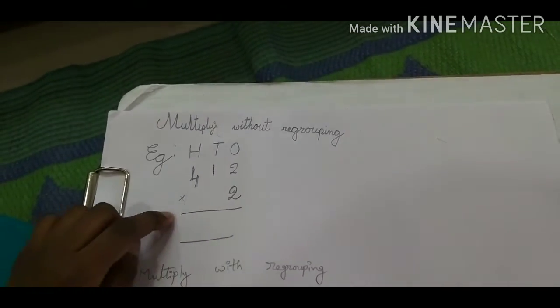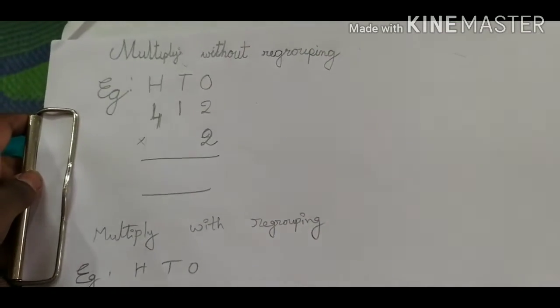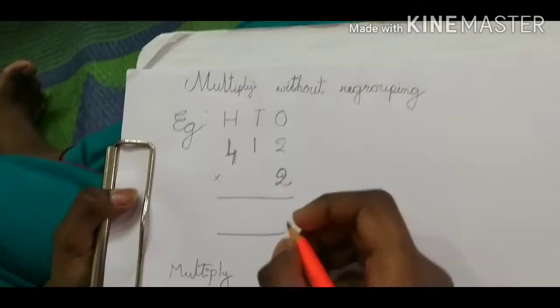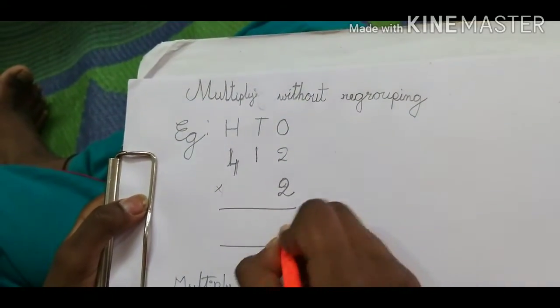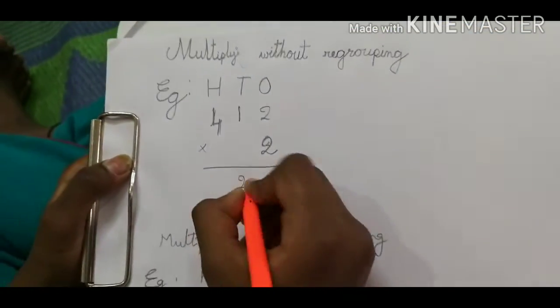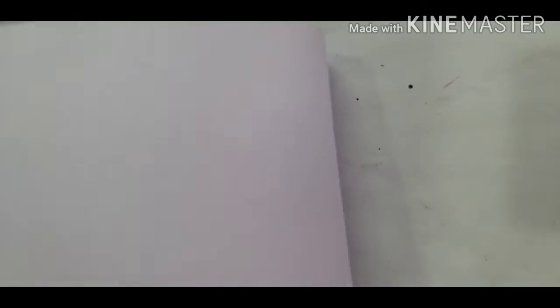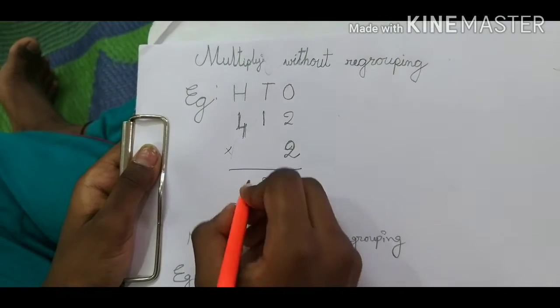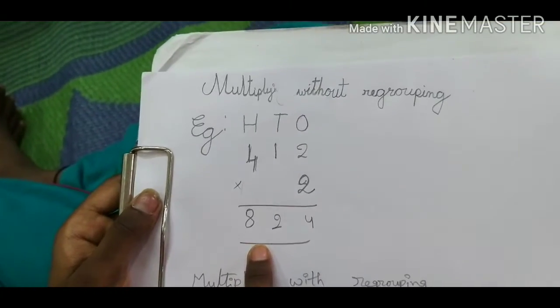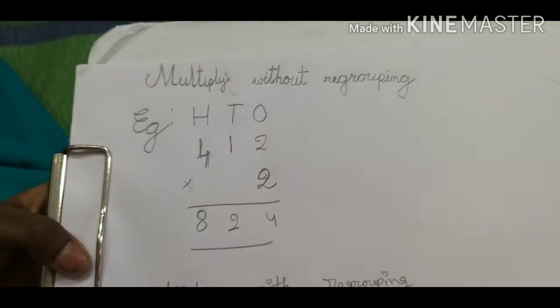Now I am going to do one example. For example, 412 multiplied by 2. 2 times 2 is 4. 2 times 1 is 2. 2 times 4 is 8. Now the answer is 824. In this case no need to use addition.